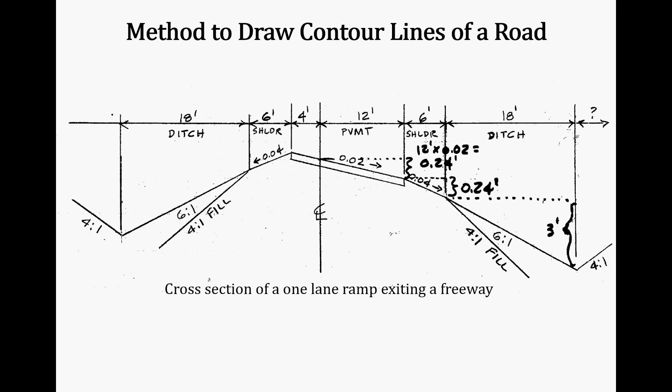One of the important pieces of information we need for drawing contour lines is the cross section. This is the cross section shown for this one-lane ramp.